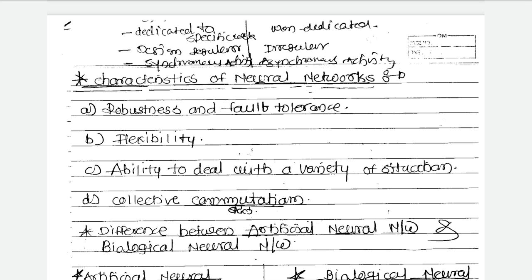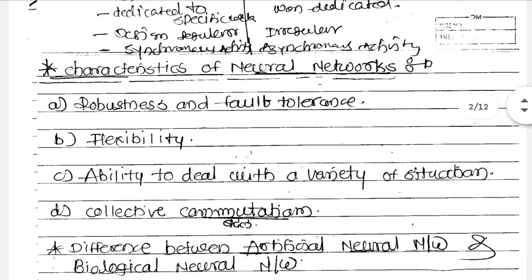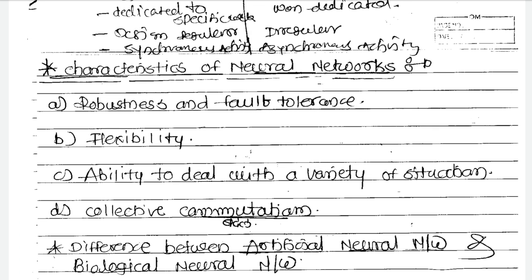The characteristics of neural networks are: robustness and fault tolerance, flexibility — the ability to deal with a variety of different situations — expertise solution, and collective computation.